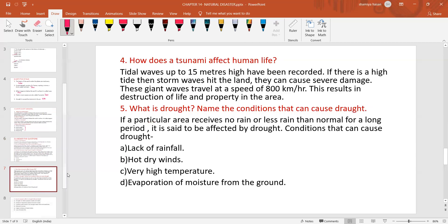Next question. How does a tsunami affect human life? Tidal waves up to 15 meters high have been recorded. If there is a high tide, then storm waves hit the land. They can cause severe damage. These giant waves travel at a speed of 800 kilometers per hour. This results in destruction of life and property in the area.